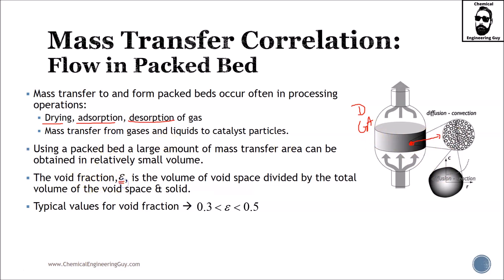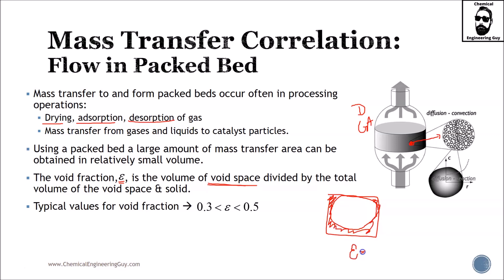The void fraction is something you need to consider as well. It is essentially the fraction of space not occupied divided by the total volume. For example, in this case, the void space of this cylinder — all this part right here is void — so epsilon will be the area of the cylinder divided by the total area of the square. That's essentially the void fraction.